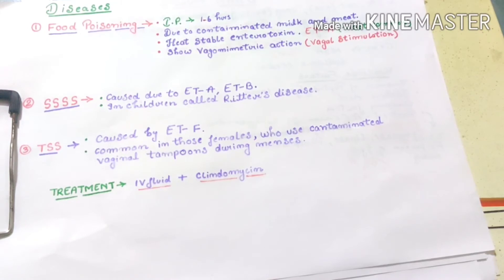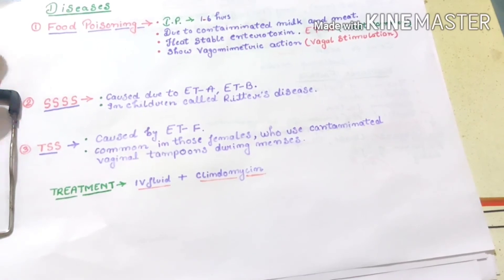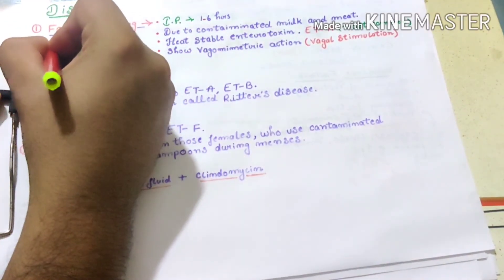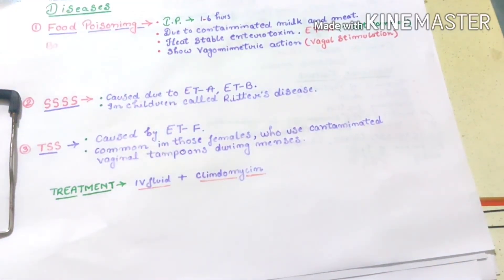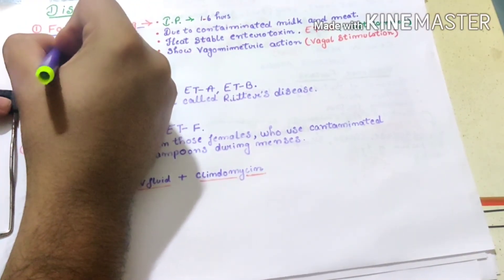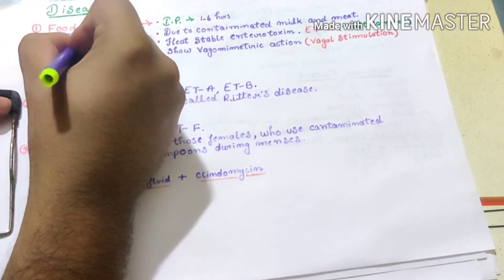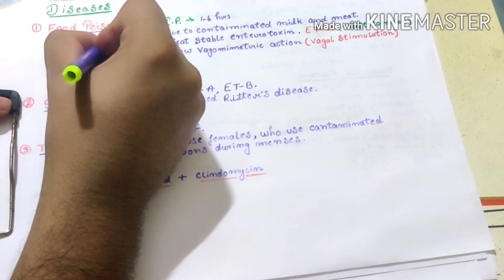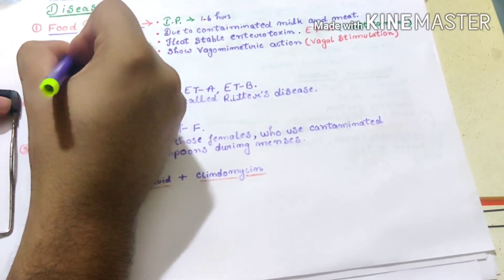Now the question and exception here is that food poisoning is caused by two organisms: Staph aureus, which we are studying, and another is Bacillus cereus.